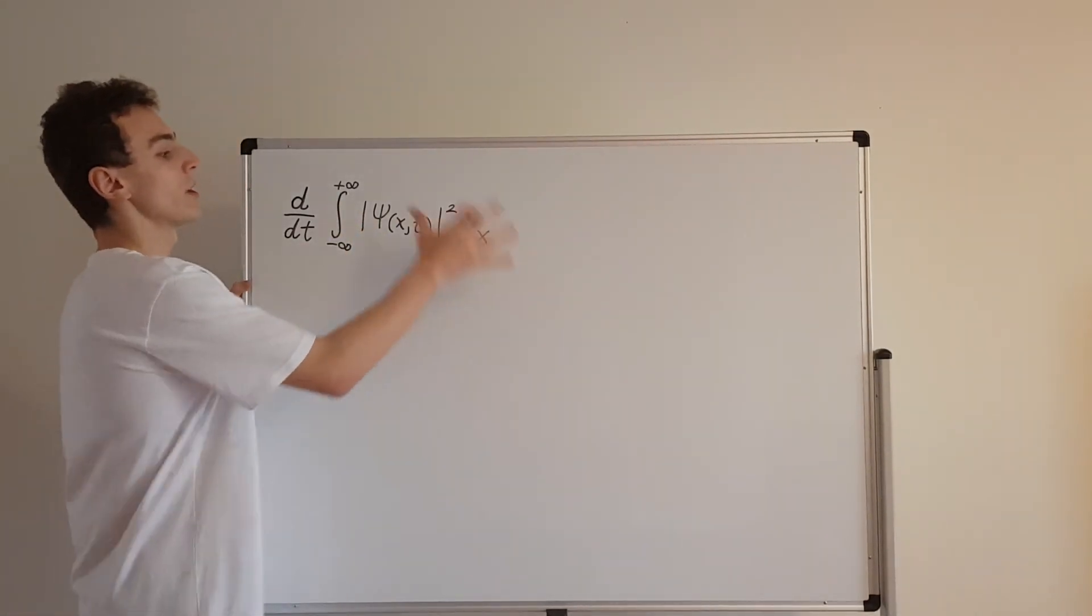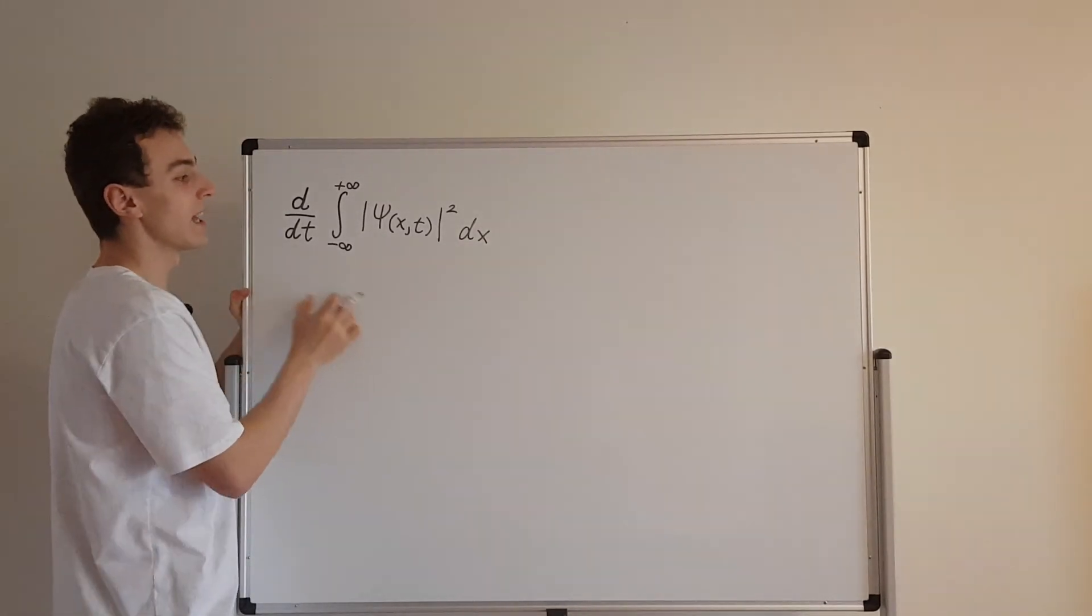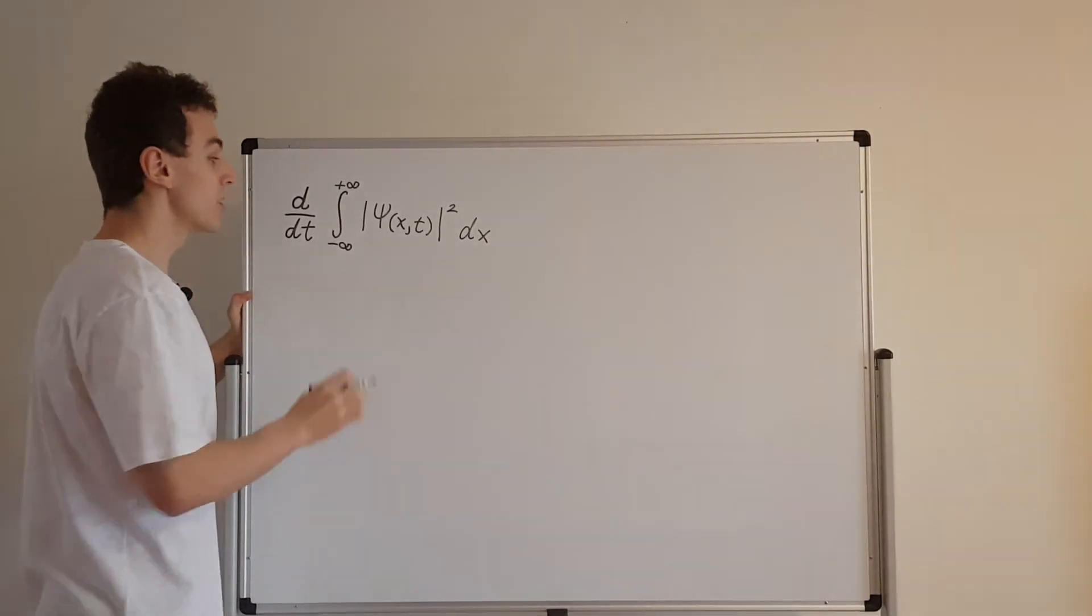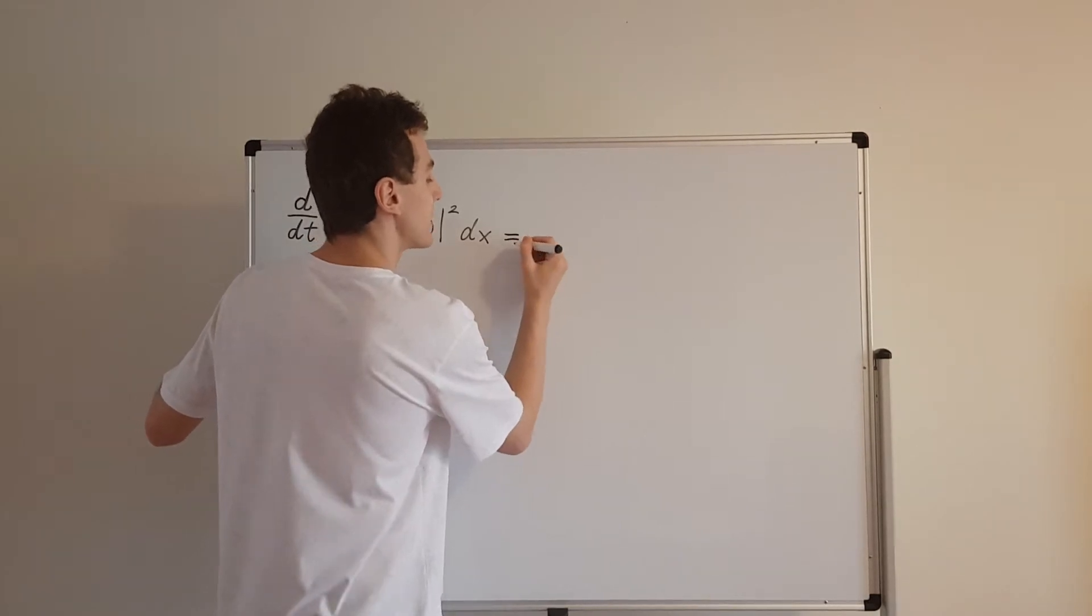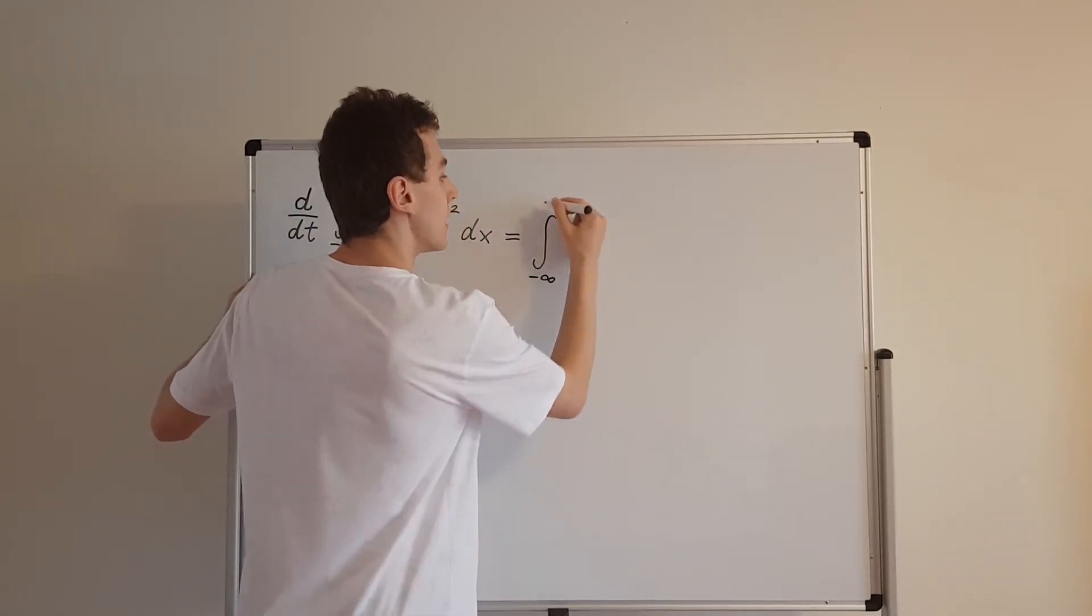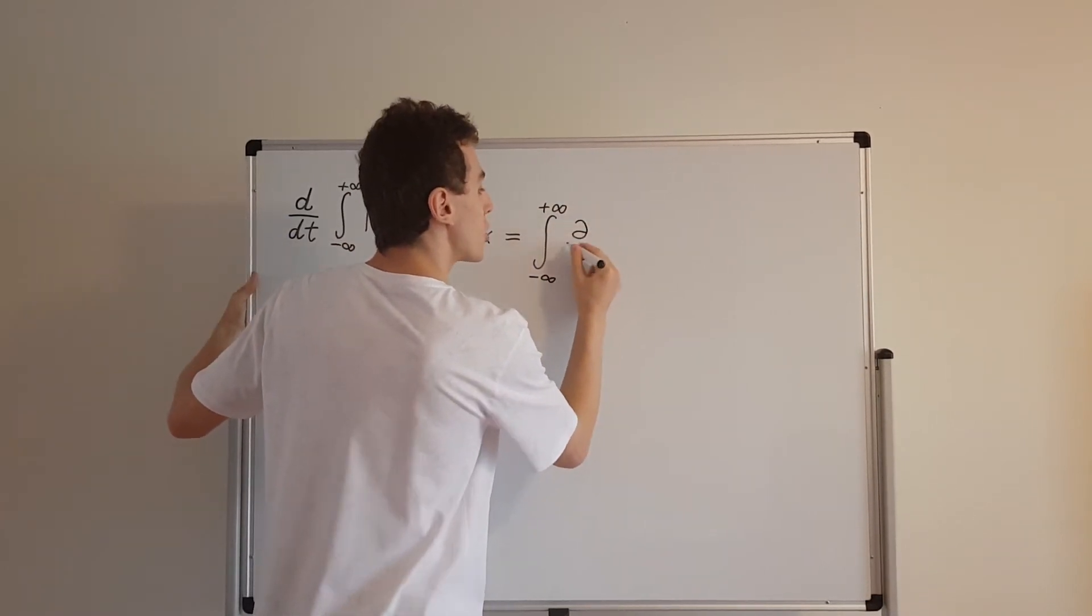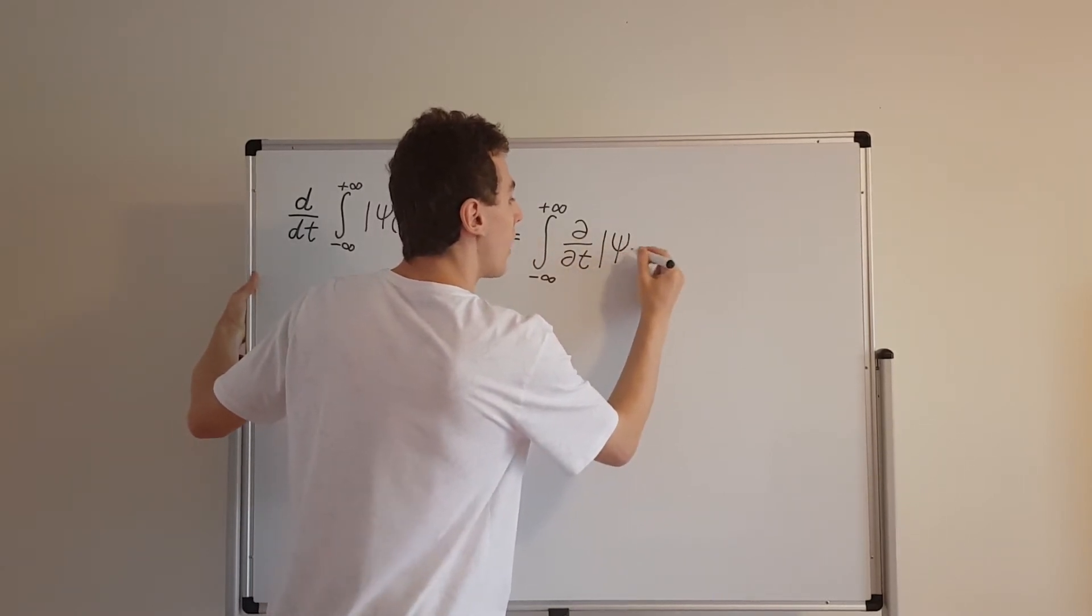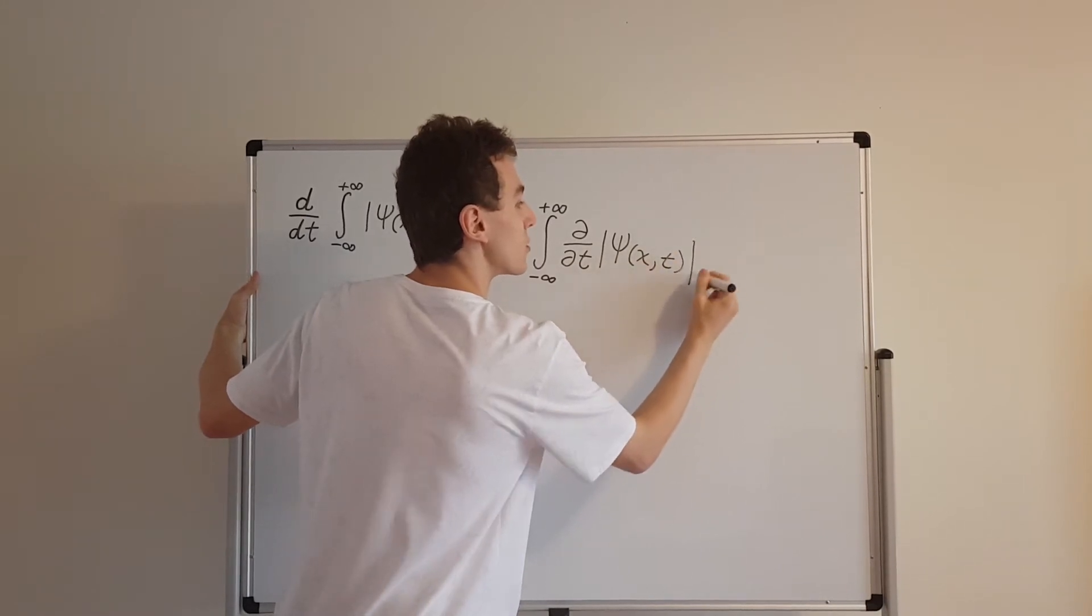So what did we do after we looked at this? We actually repackaged it by moving the derivative inside. But we have to be very careful, because this guy actually turns into a partial derivative. So I'll go ahead and write the expression when we move it inside. So we have the integral from minus infinity to plus infinity of the partial time derivative. So I'm writing a partial derivative now. And I'll explain why it has to be a partial derivative and not a total derivative.